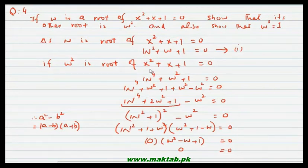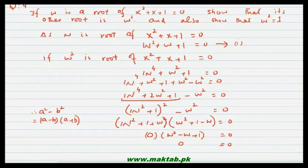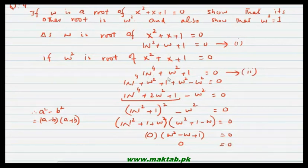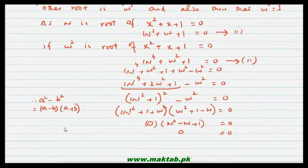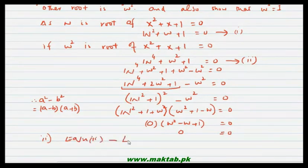Now the other part: show that omega cube is equal to 1. Hamare paas yahan do equations aayi — ek: omega square + omega + 1 = 0, aur doosri: omega⁴ + omega² + 1 = 0. In do equations ko use karte hue hum prove karenge ke omega cube is equal to 1. Second part: show that omega cube is equal to 1.